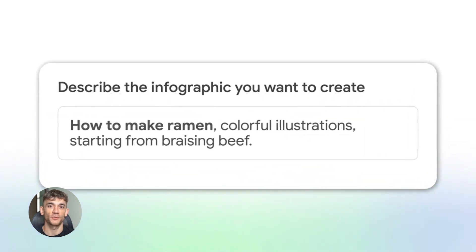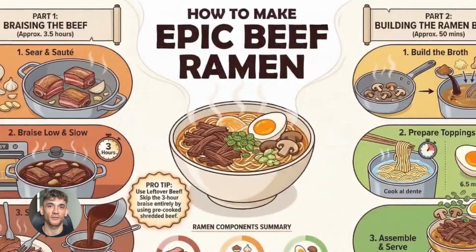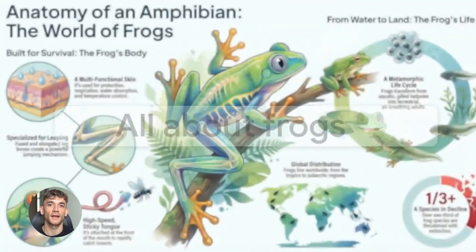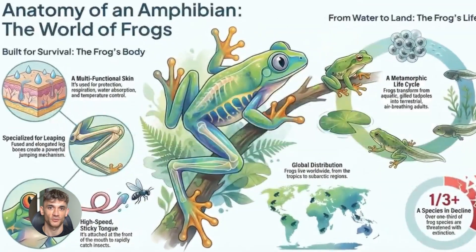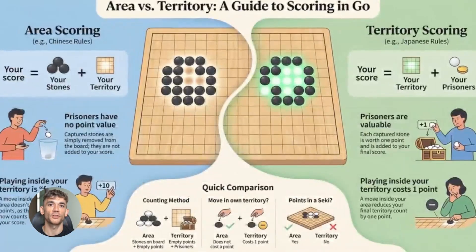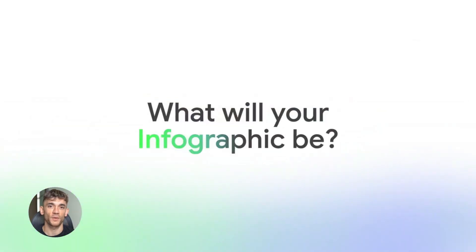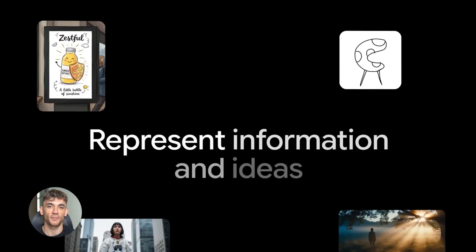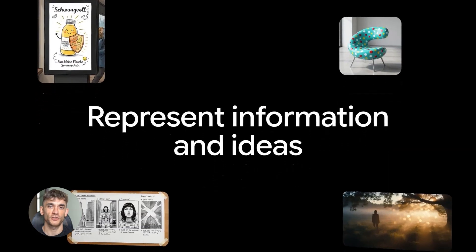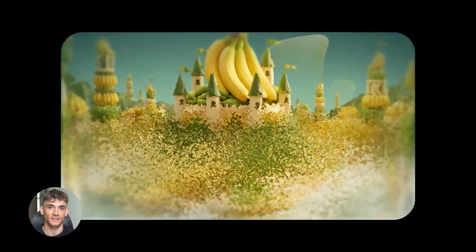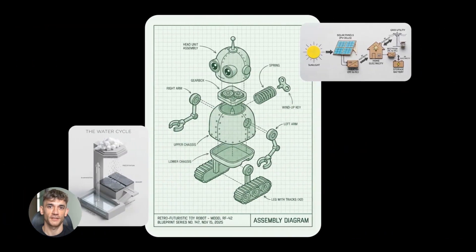Here's how it works. You take all your source documents in Notebook LM — could be research papers, meeting notes, could be anything — and you tell it to create an infographic. What you get back is a professional visual summary: charts, diagrams, relationship maps, key points laid out perfectly. The cool part is that these aren't just pretty pictures, they're actually accurate. Nano Banana Pro is connected to Google Search's knowledge base, so it understands context, knows what matters, and creates visuals that make sense.